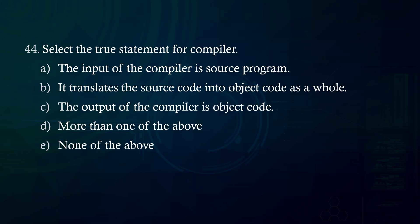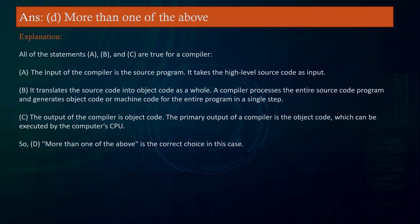Select the true statement for compiler. A. The input of the compiler is source program. B. It translates the source code into object code as a whole. C. The output of the compiler is object code. D. More than one of the above. E. None of the above. Answer: More than one of the above. Explanation: All statements A, B, and C are true for a compiler. The input is a high-level source program. A compiler processes the entire source code and generates object code in a single step. The primary output is the object code, which can be executed by the computer's CPU. Therefore, D — more than one of the above — is correct.